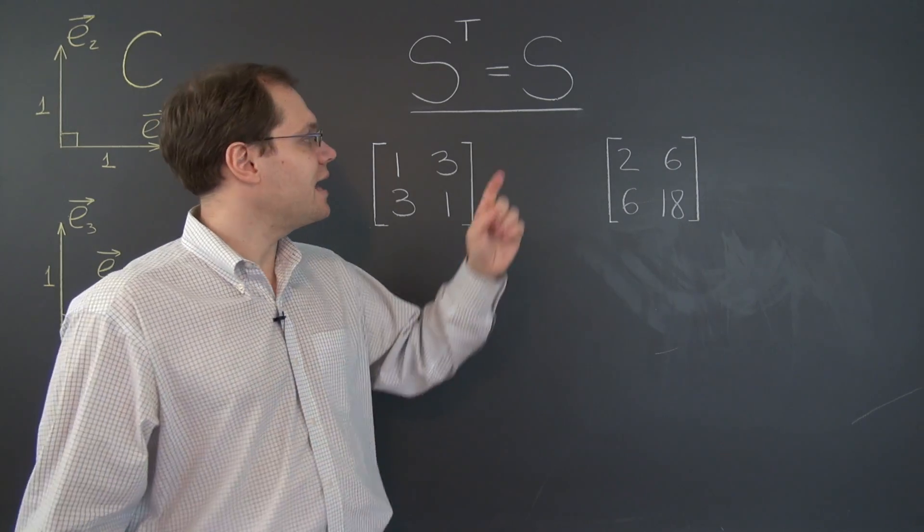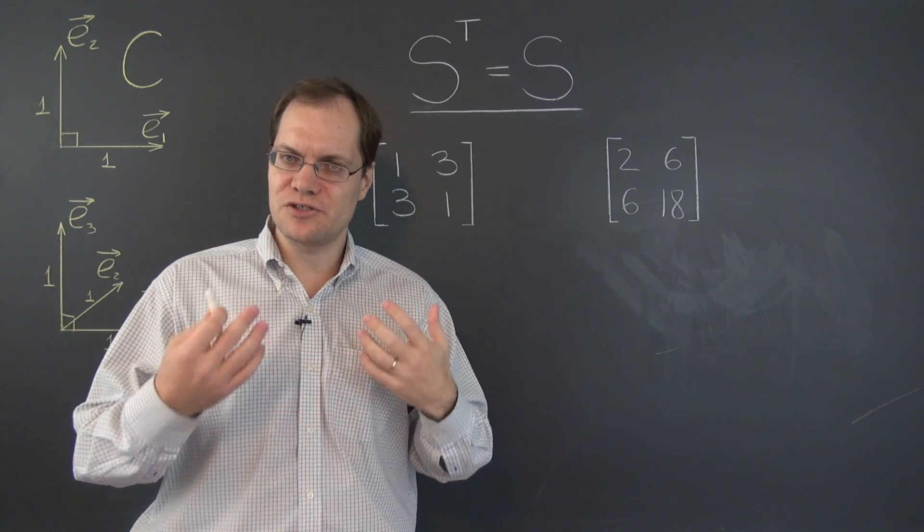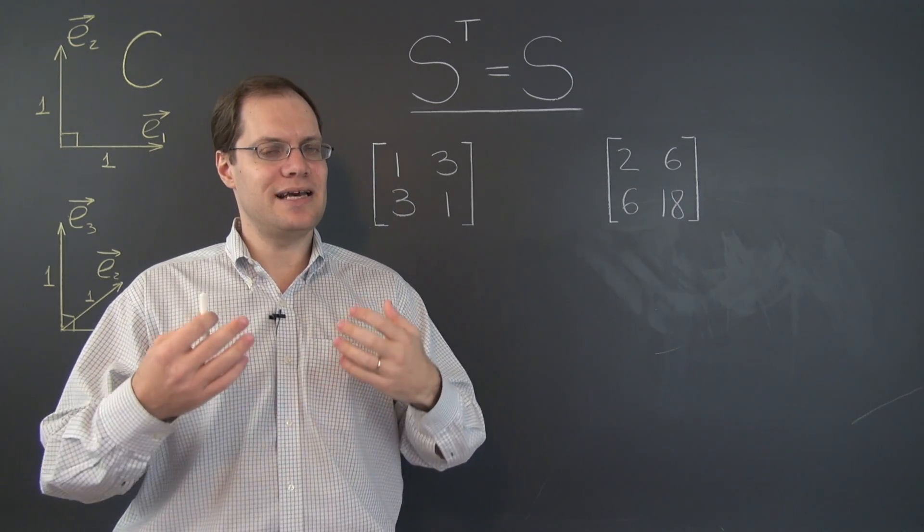Well, we can now add the symmetric property to the list, because it tells us something about the eigenvectors of the matrix, namely that they are orthogonal.